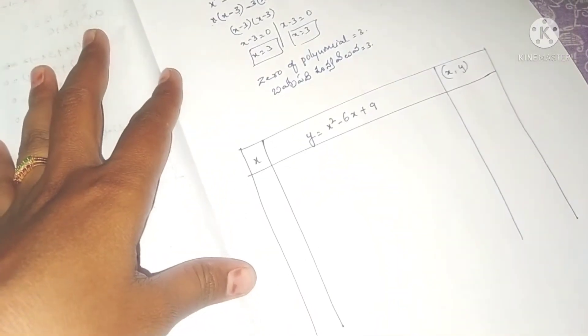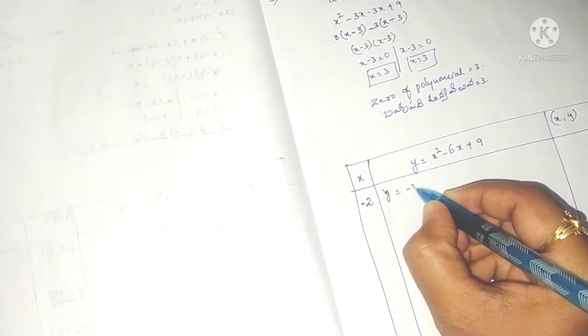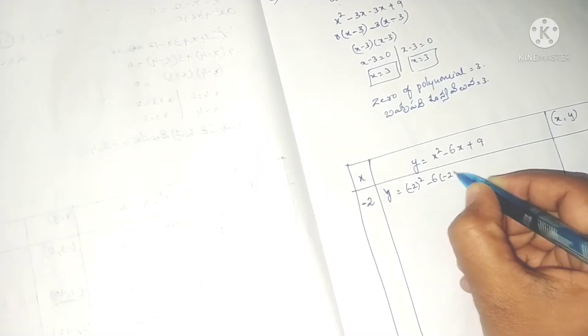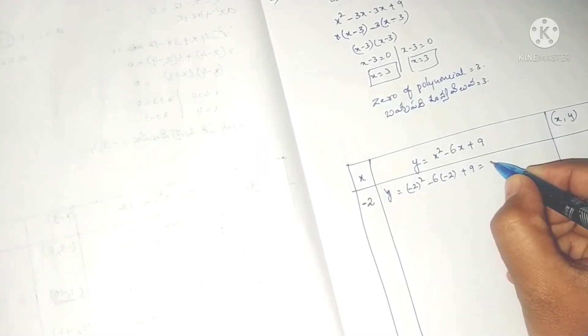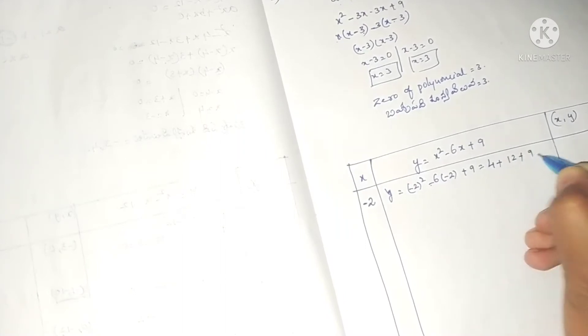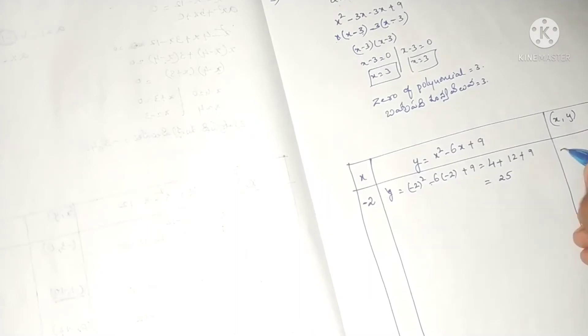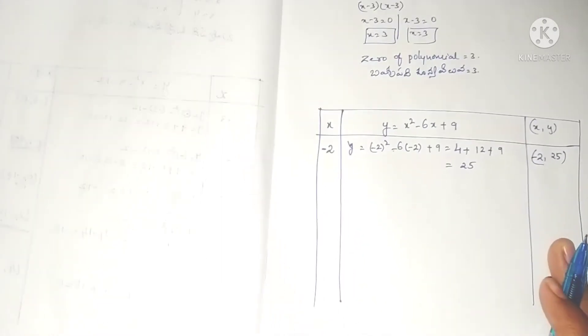Now let's prepare the table of points. We will substitute x values. First, take x = -2: y = (-2)² - 6(-2) + 9 = 4 + 12 + 9 = 25. So we get the point (-2, 25).